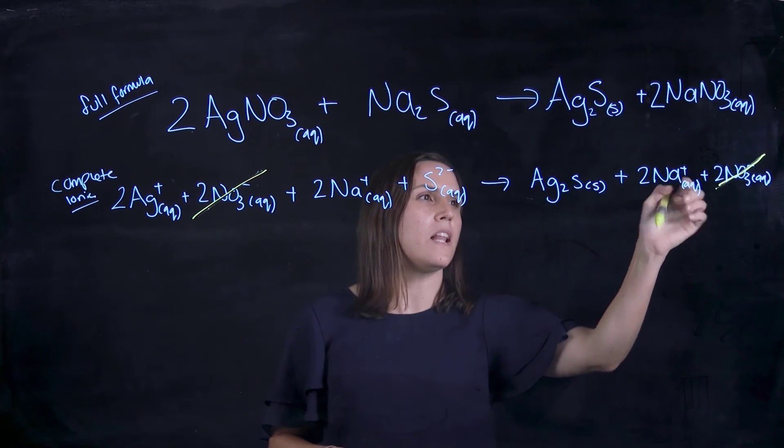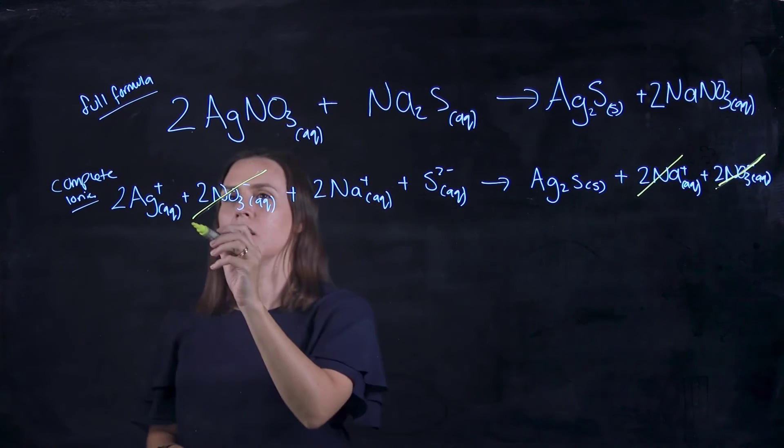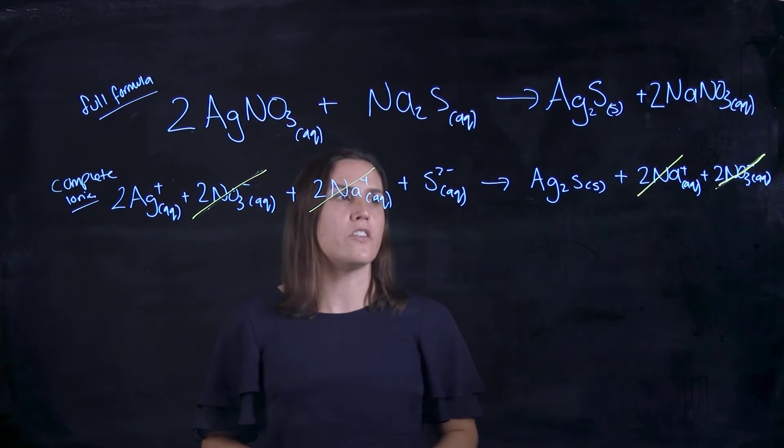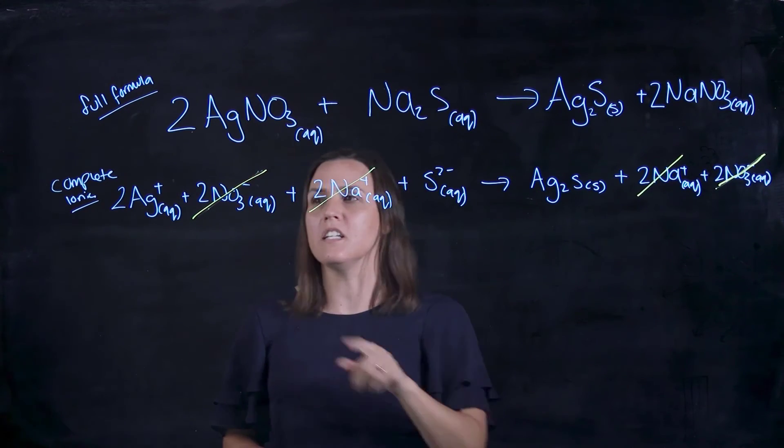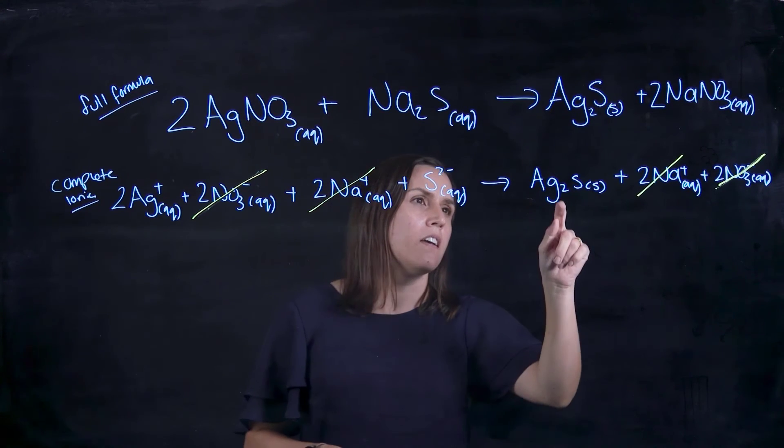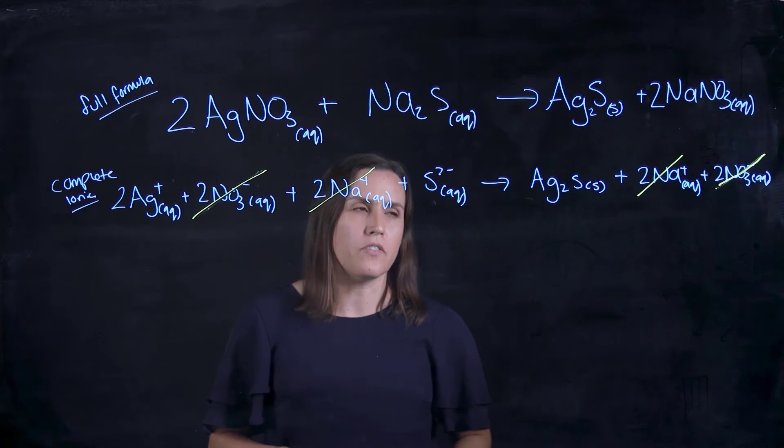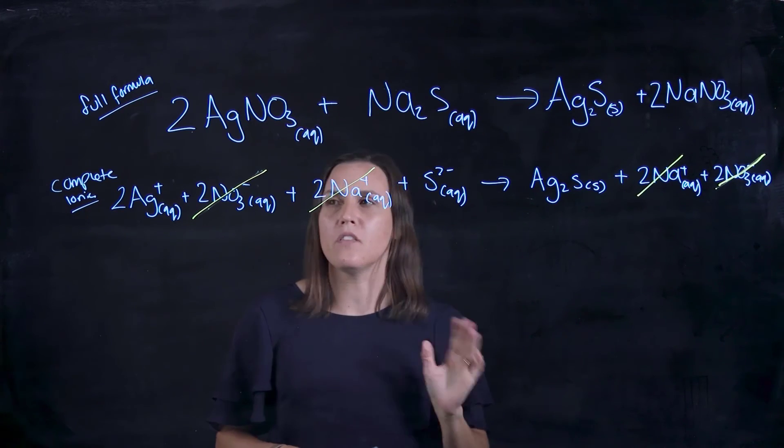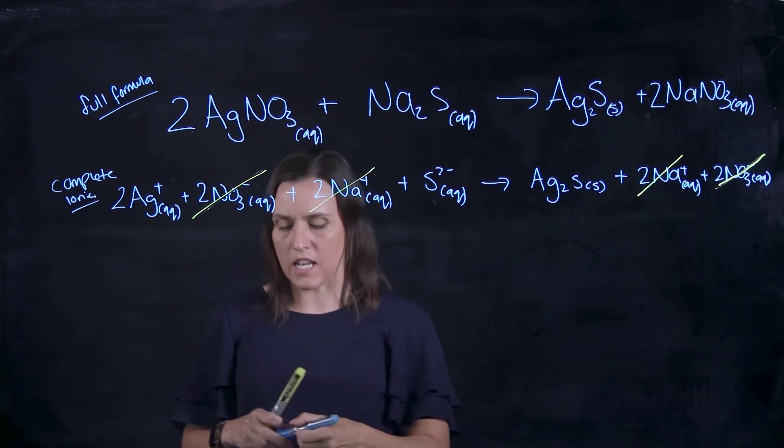The Na plus, Na plus, that's not changing. What is changing is the silver and the sulfide to make our silver sulfide, so they're the ones that would be in the net ionic.